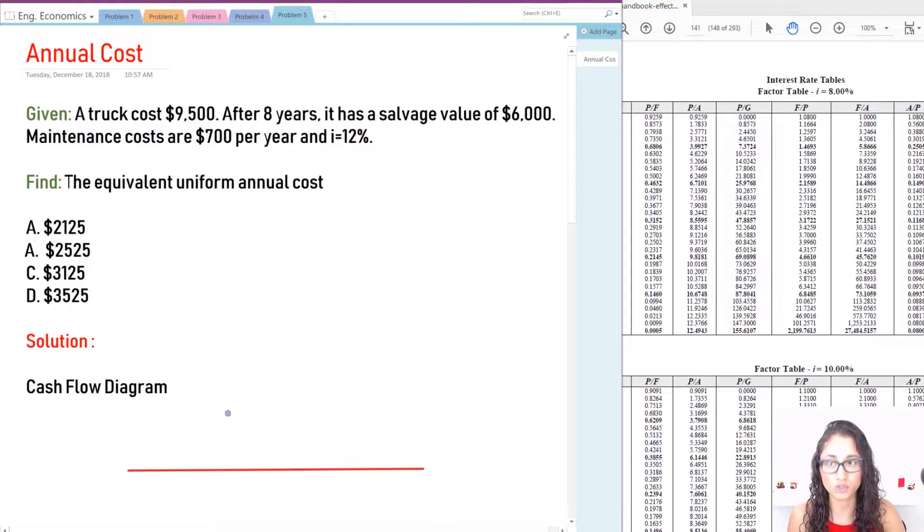Okay, so we're given a truck that costs $9,500. After eight years, it has a salvage value of $6,000. The maintenance cost is $700 per year. What that means is every single year, you spend $700 for maintenance. The interest rate is 12%, and we need to calculate the equivalent uniform annual costs.